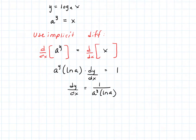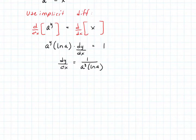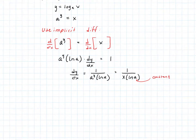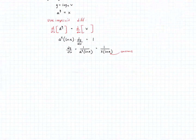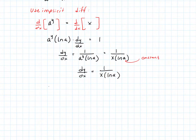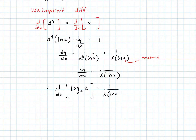So dy/dx is 1 over a to the y times the natural log of that base — that comes back from our derivatives of the exponentials. Then we know a to the y is actually just x. So this is equal to 1 over x times the natural log of the base, where the natural log of a is just a constant. We've now proven that the derivative of log base a of x is 1 over x times the constant natural log of a.